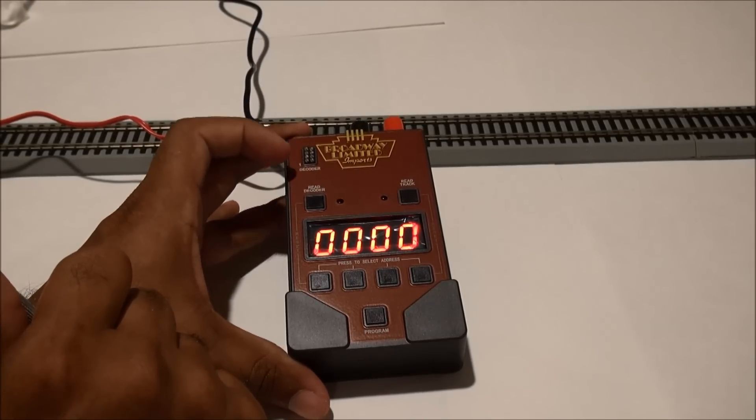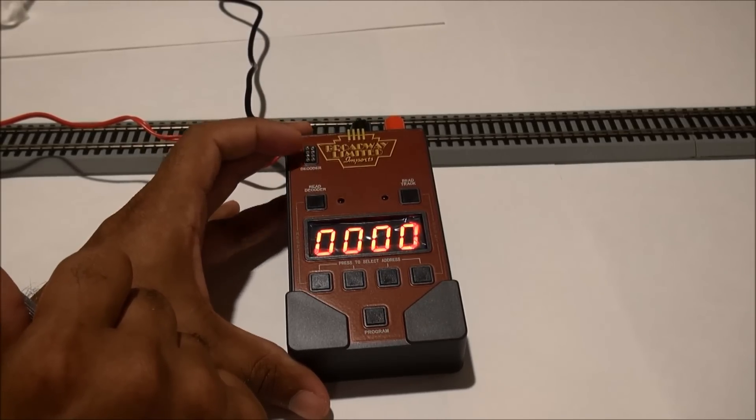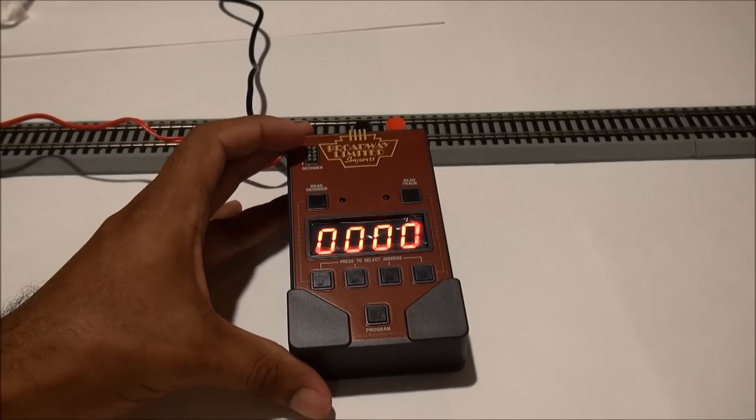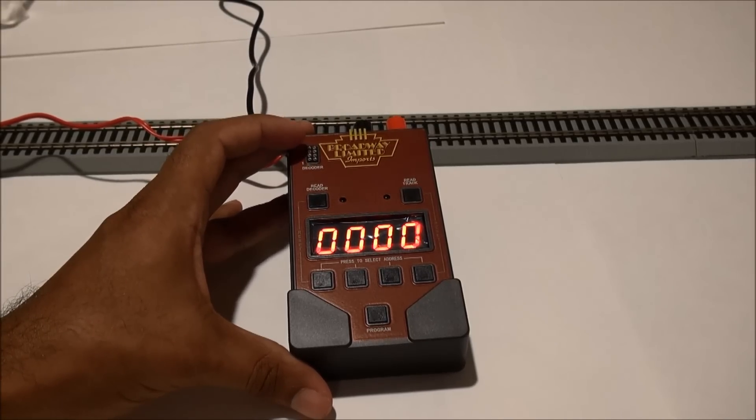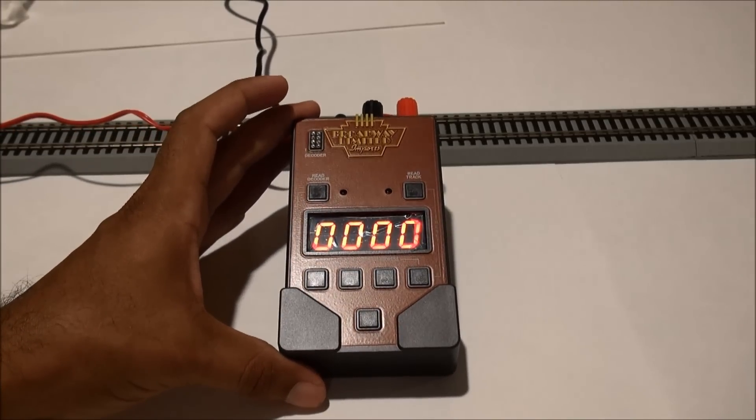Or if you've already got them installed, you pop it out and you want to change it. You don't have to go through the locomotive and the program track to do it. It does it directly through the decoder. I'm not able to test this feature out today, especially after the move with stuff in boxes, but we'll take a look at that down the road at some point.